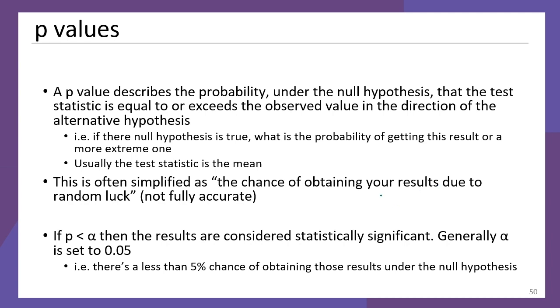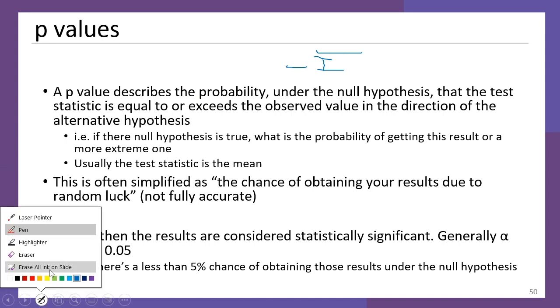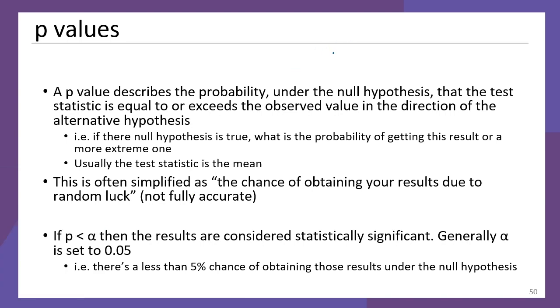And this is where p-values come in. A p-value, if I'm going to talk about this really properly, describes the probability, under the null hypothesis, that the test statistic is equal to or exceeds the observed value in the direction of the alternative hypothesis. So let's say we've got some data points here and there, and we're like, what's the difference between these means? Then the p-value would go, okay, what's the probability of having at least that much difference in order to say that there's a relationship?